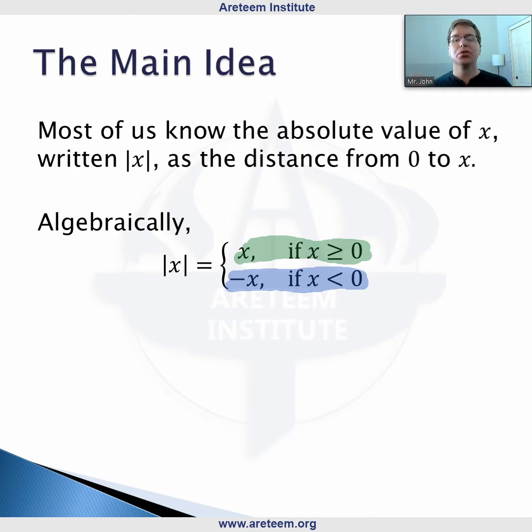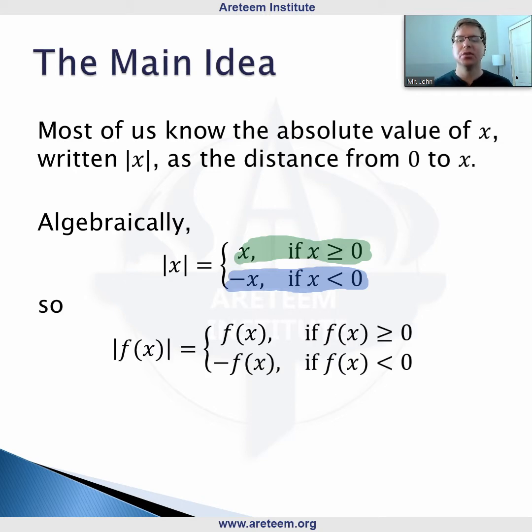Now the true power of this is when you apply this to functions. Anytime you have variables in algebra, you can make substitutions, so if we replace x by a function, the absolute value of that function is the normal function as long as that function is positive, and it is negative that function if that function is negative. So we have the same type of plus or minus portion, but now it depends on whether that function is positive or negative.